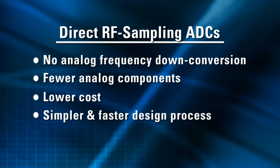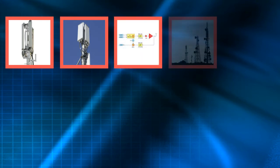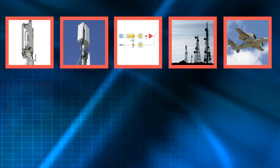This reduction in component count also simplifies and speeds up the design process. The benefits of an RF sampling ADC apply across a wide variety of applications including 3G and 4G base station receive and digital pre-distortion, wireless backhaul, and military communications and signal intelligence.